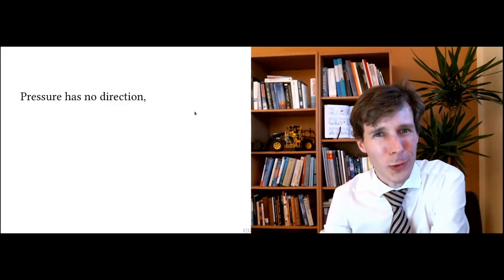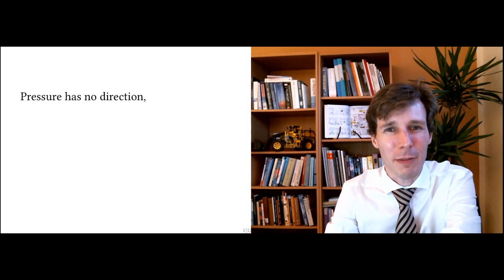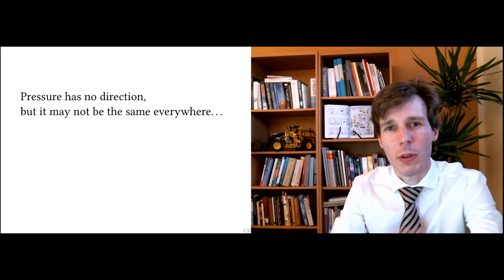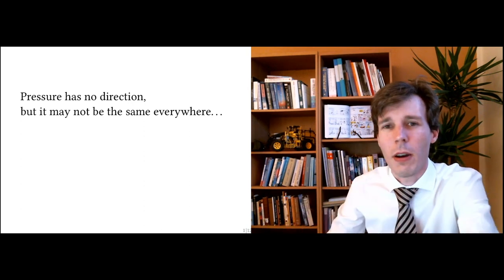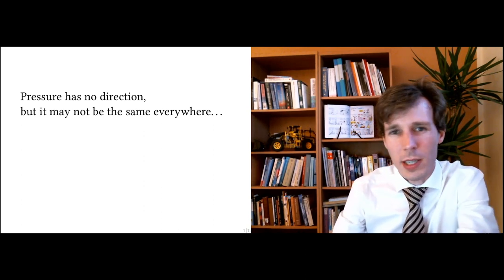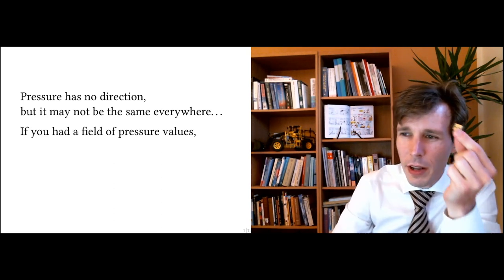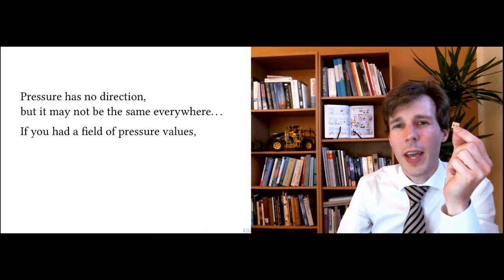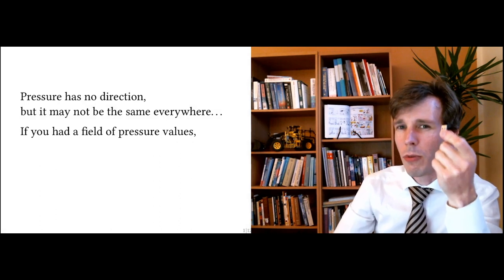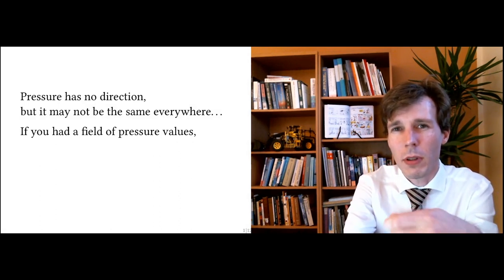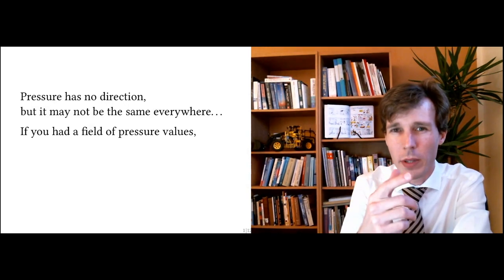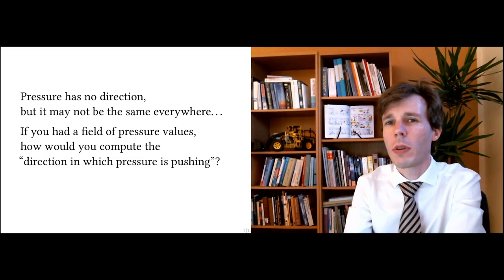In flow mechanics, pressure has no direction, but it may not be the same everywhere. If the flow is at all interesting, you will typically have pressure differences occurring in space and in time. The question I'd like us to study right now is: if I give you a USB key with the pressure at each point in space and time, how would you compute the net effect of pressure — the direction in which pressure is pushing the fluid everywhere in space?